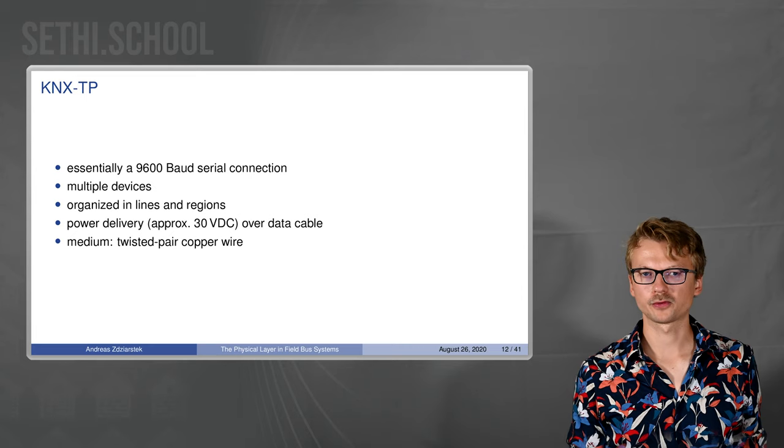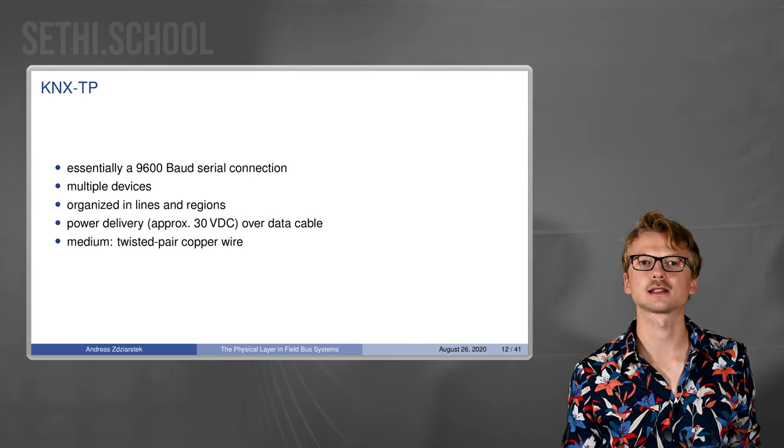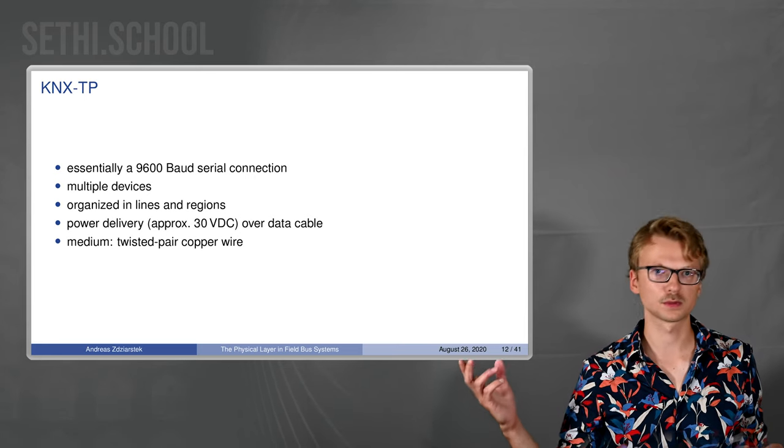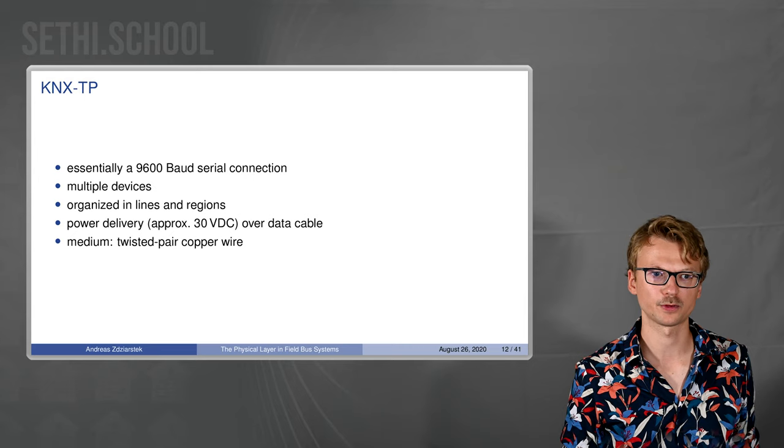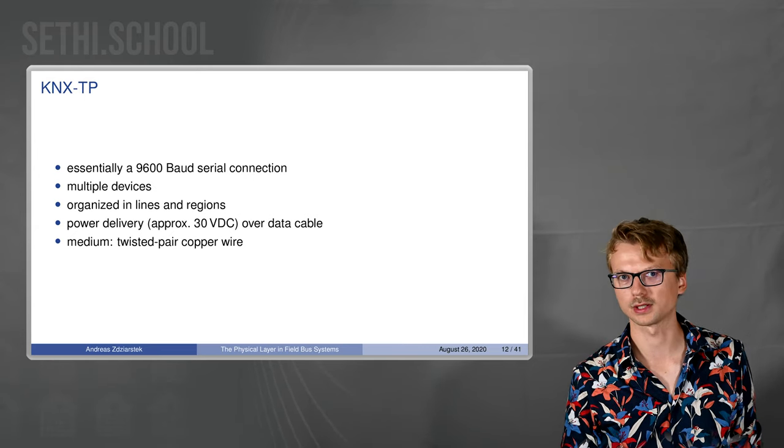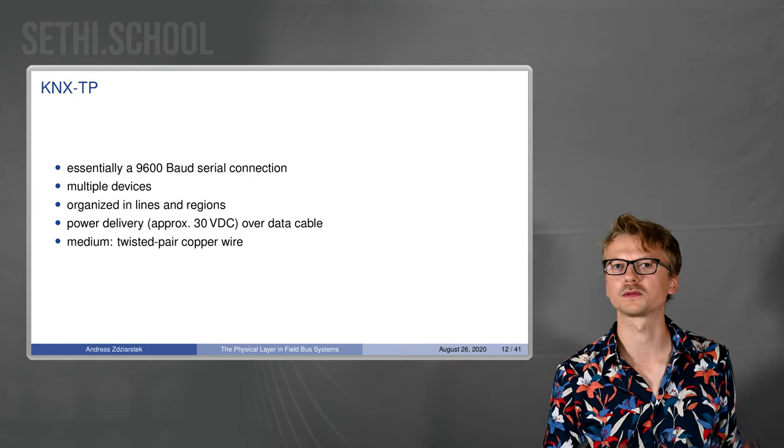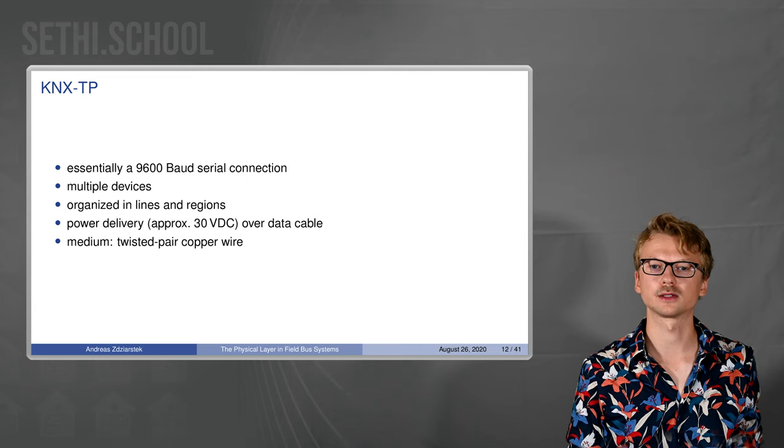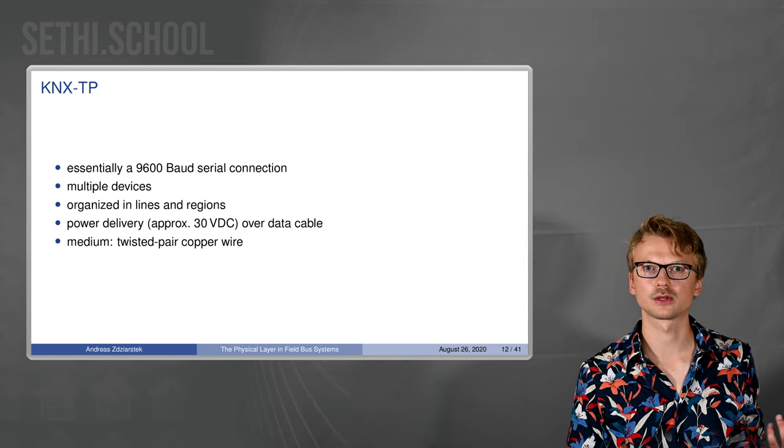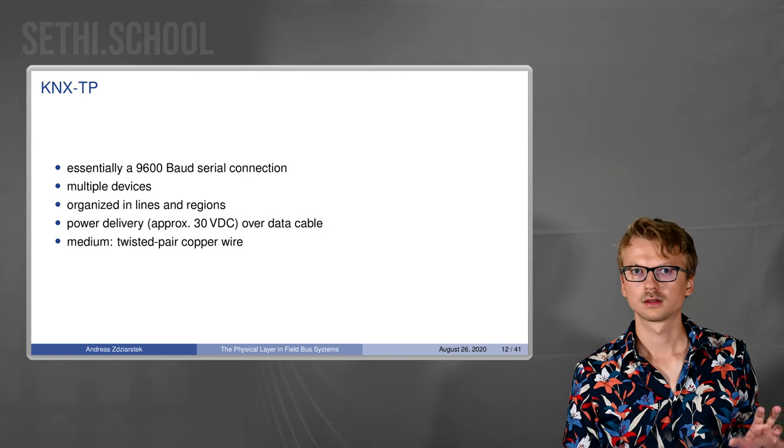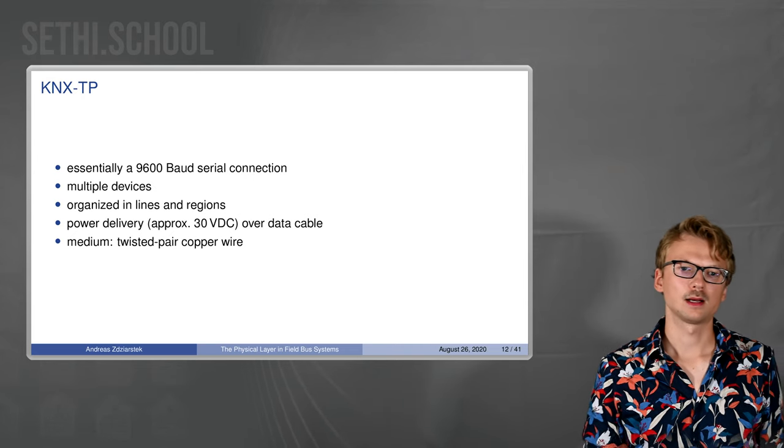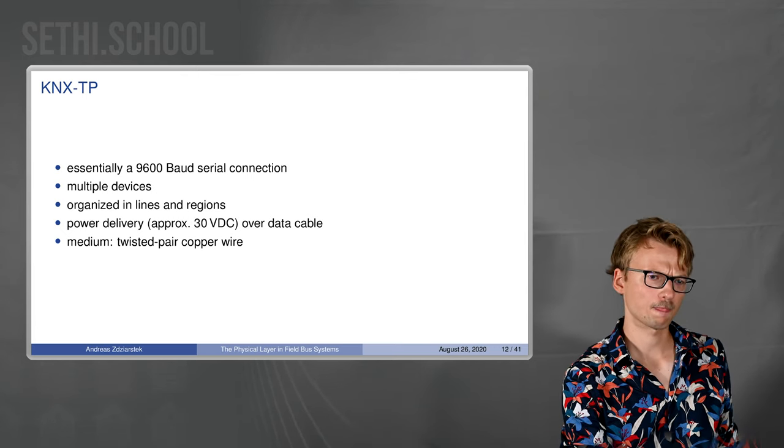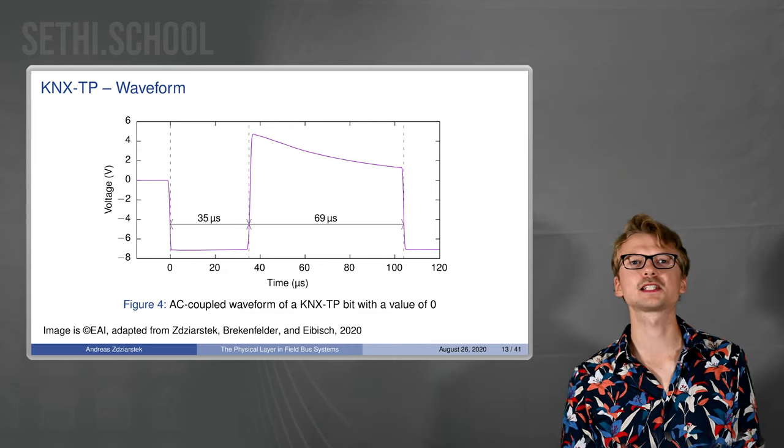The part of KNX we are specifically looking at is called KNX TP. It's the one part of KNX which really connects, for example, light switches with the lights or the controller with the AC unit or something. Essentially it's a serial connection. It's quite similar to the RS-232 one we've seen before with the notable exception that it does deliver power over its line with approximately 30 volts DC and a couple tens of milliampere of current. It goes over twisted pair copper wire which looks a bit like Ethernet.